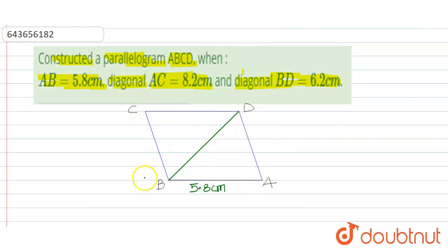So, its diagonal is AC, so suppose I am drawing a line AC through point A to C. Then we will construct, then we will join AD, CD and BC. Hence our parallelogram will be completed.